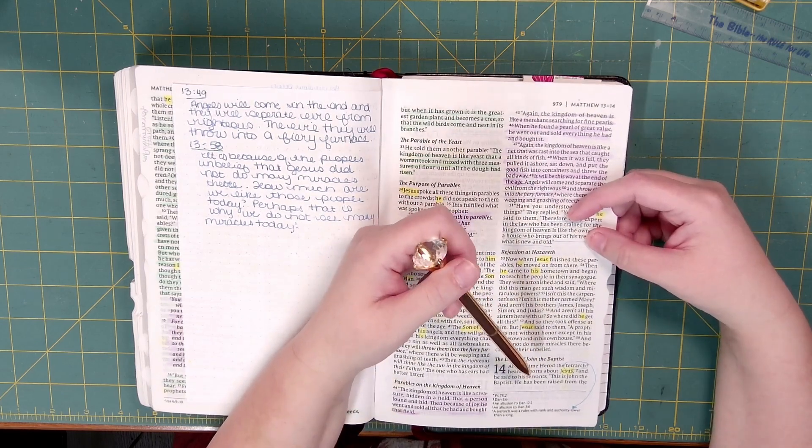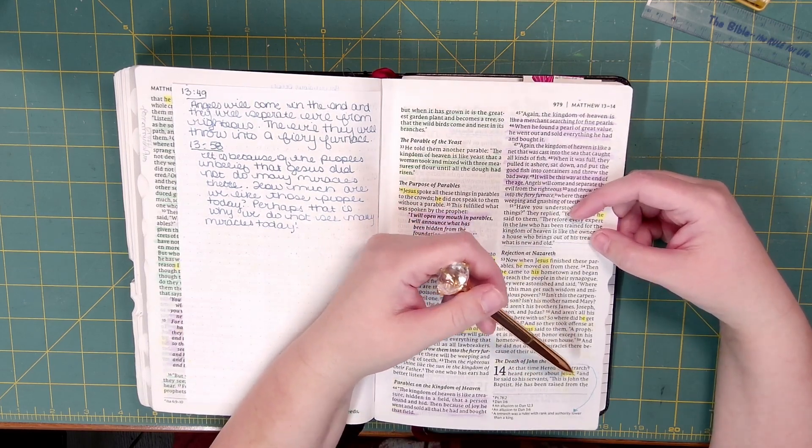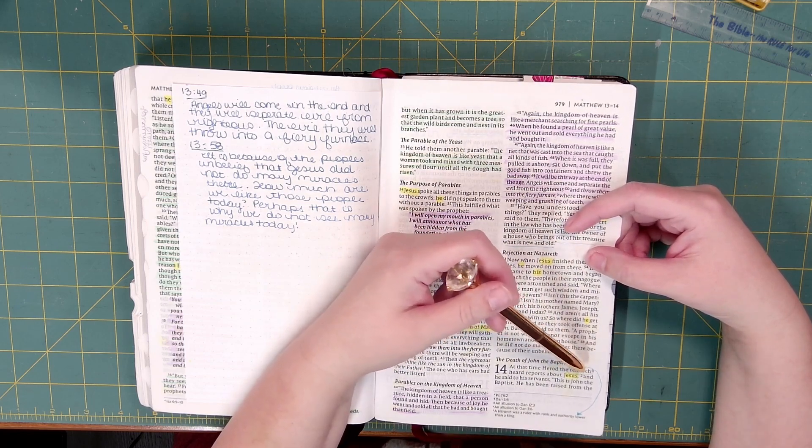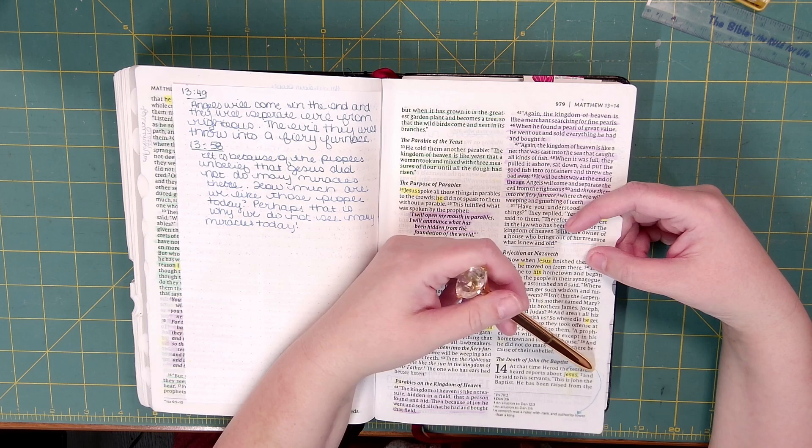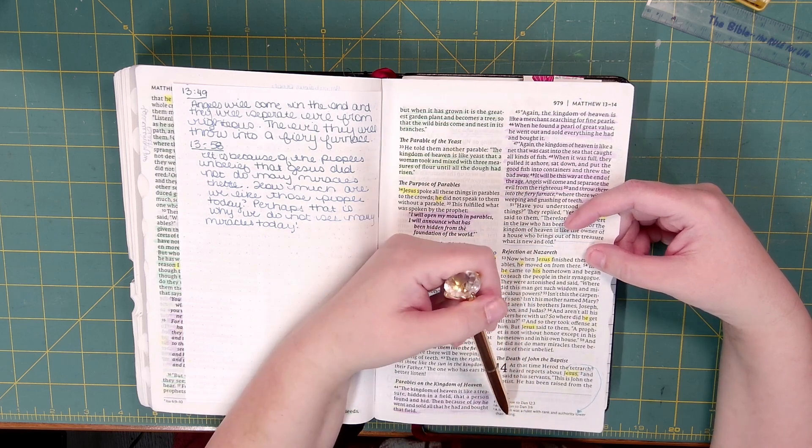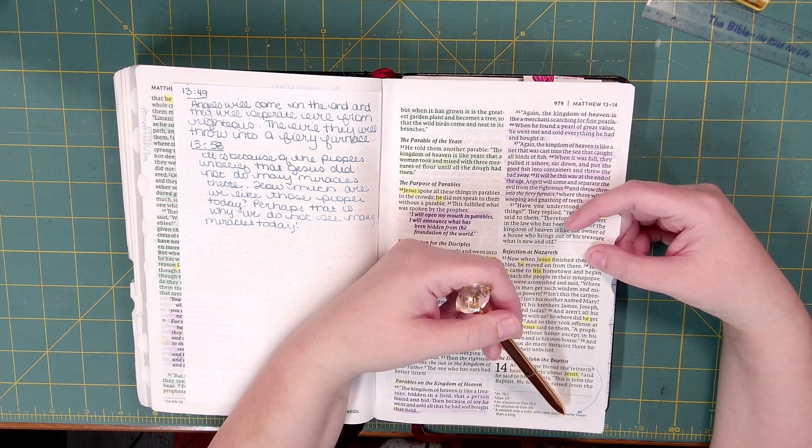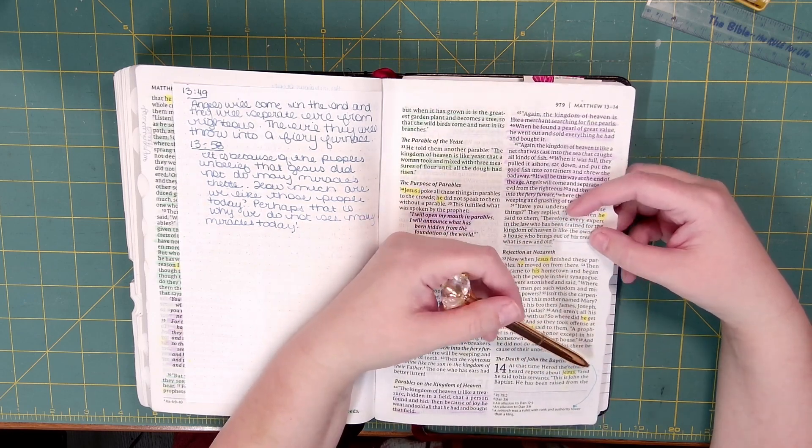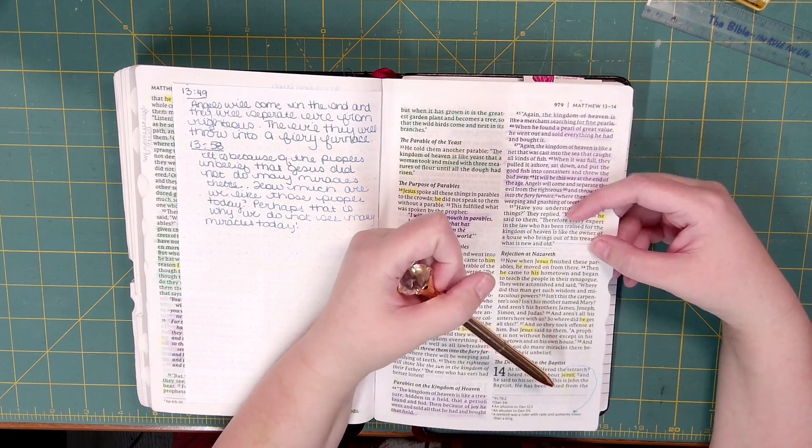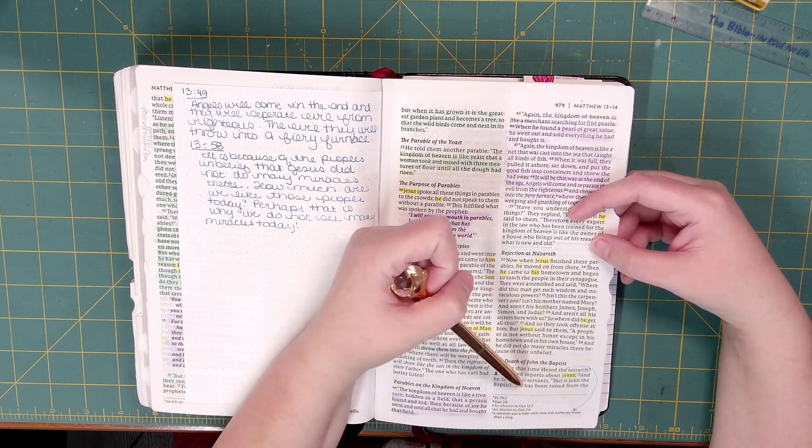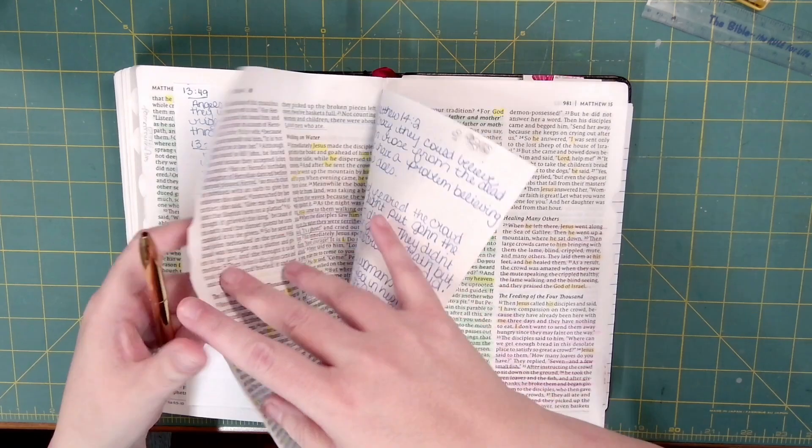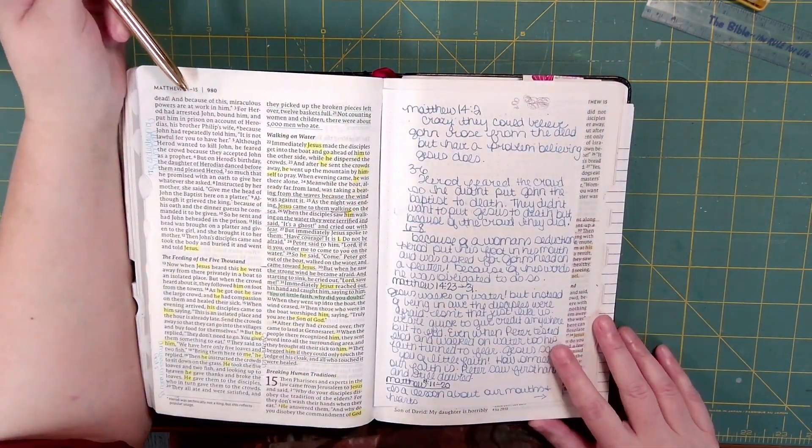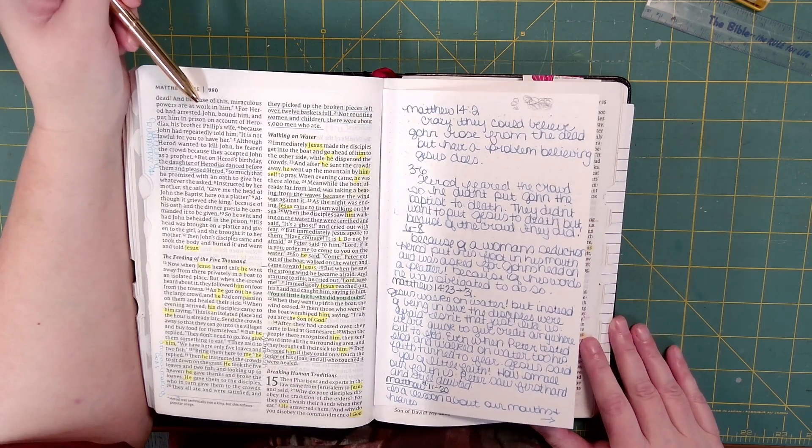Chapter 14. At that time, Herod the tetrarch, that's a hard word to say, T-E-T-R-A-R-C-H. It means he was a ruler with rank and authority lower than a king. Herod heard reports about Jesus, and he said to his servants, this is John the Baptist. He has been raised from the dead, and because of this, miraculous powers are at work in him.